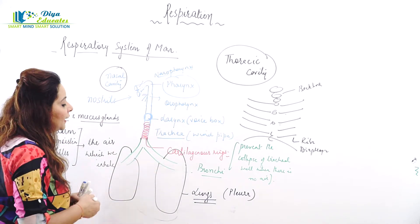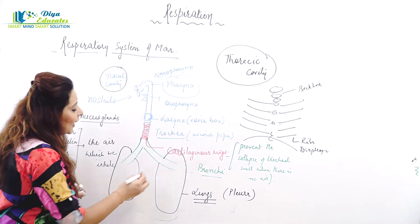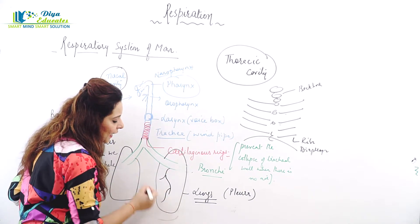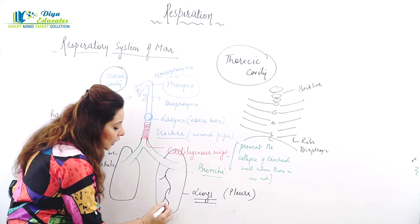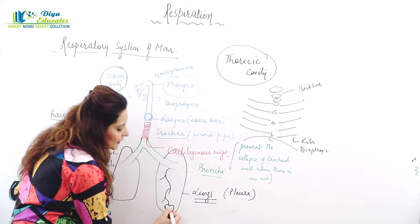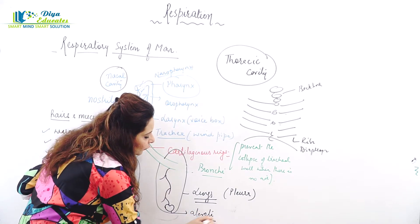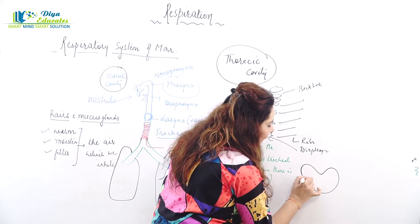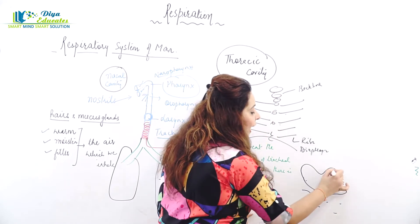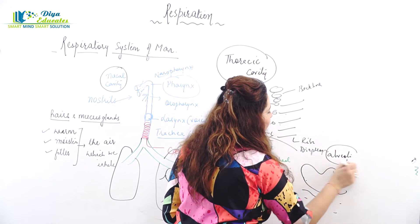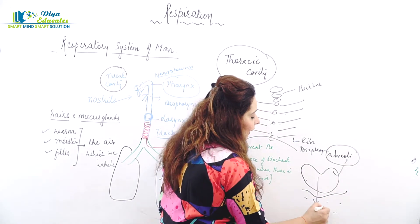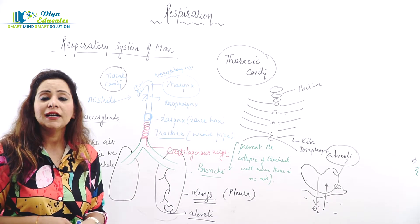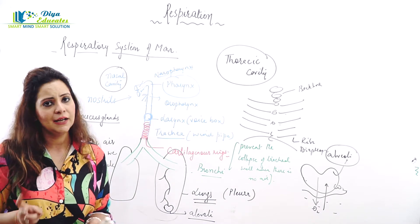Now, the bronchi that enter the lungs divide to form branches: the primary bronchi, secondary bronchi, tertiary bronchi, then bronchioles, and finally we have sac-like structures called alveoli. The alveoli are surrounded by a tuft of capillaries. Alveoli are the part of the respiratory system where the actual exchange of gases takes place — oxygen flows into the blood and carbon dioxide flows into the alveoli.